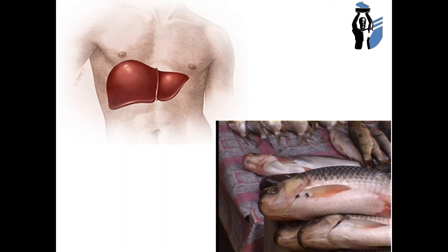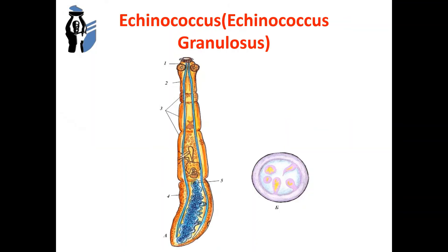The next representatives of type flatworms are individuals of class Cestoda, for example species Echinococcus granulosus — it is the pathogen of echinococcosis. The morphological characteristics are: the parasite body has a length from 3 to 6 mm; the scolex has 4 suckers and a proboscis with hooks. It is characterized by the presence of 3 to 4 segments of different degrees of maturity. The penultimate segment is hermaphrodite. The mature segment — the last one — is the longest and widest, about half the length of the body, and contains a closed uterus with lateral outgrowths. The isolated segments can actively move around.